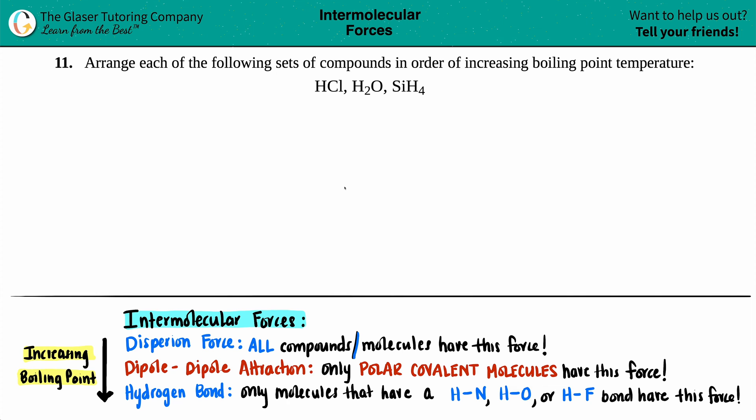Number 11. Arrange each of the following sets of compounds in order of increasing boiling point temperature. We have these three molecules here: HCl, H2O, and SiH4.